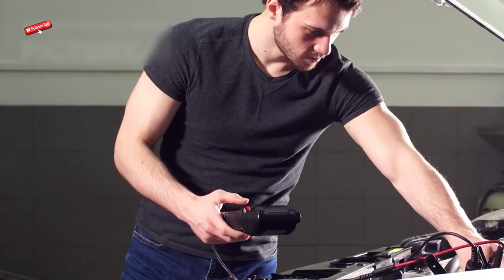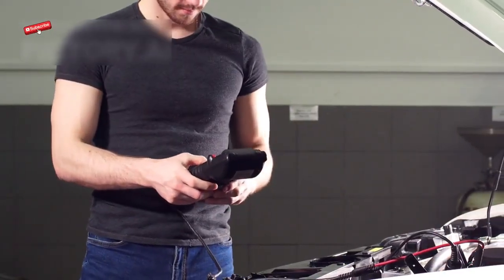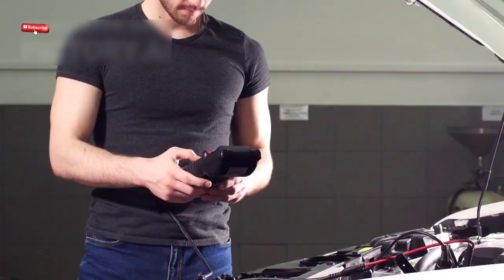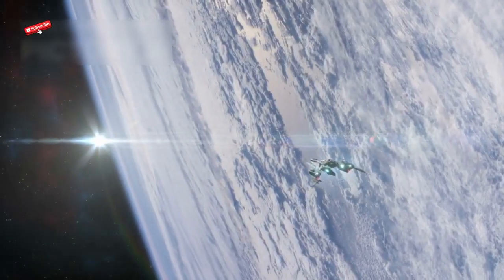Even more puzzling, Voyager 1's fault protection system, which is supposed to raise alarms if something goes wrong, remained completely silent. Eventually, after weeks of analysis, NASA discovered the problem.